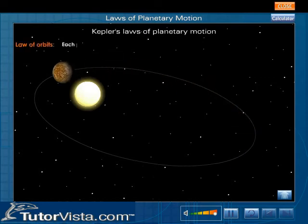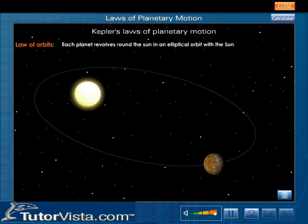Law of Orbits: Each planet revolves around the sun in an elliptical orbit with the sun at one of the foci of the ellipse.